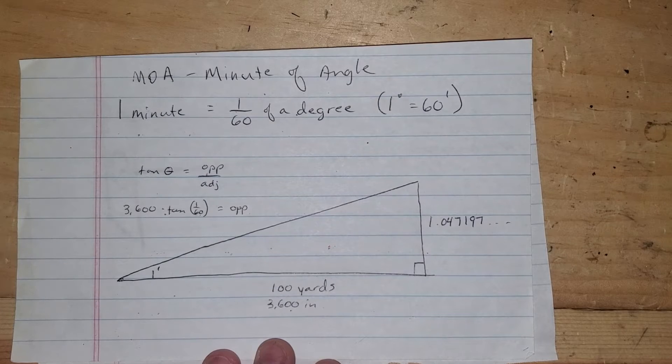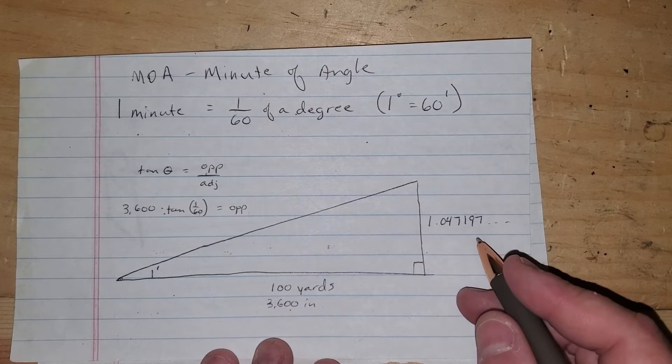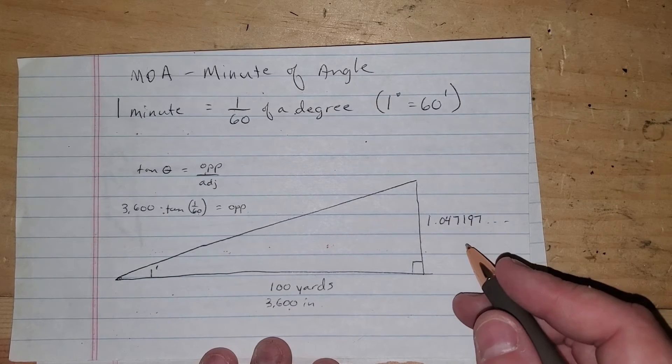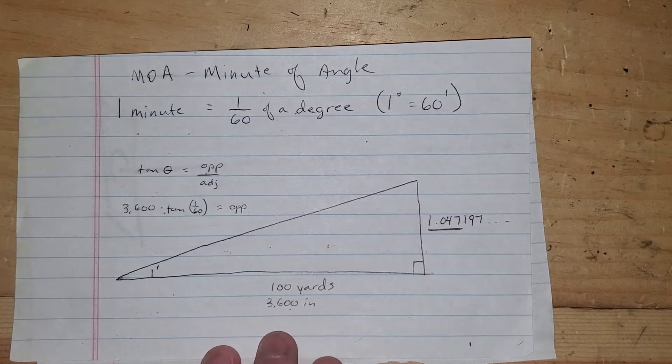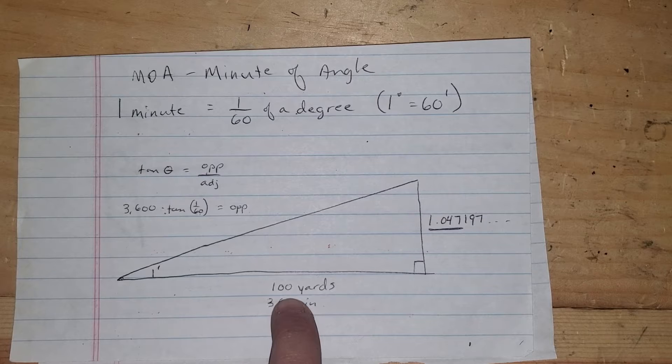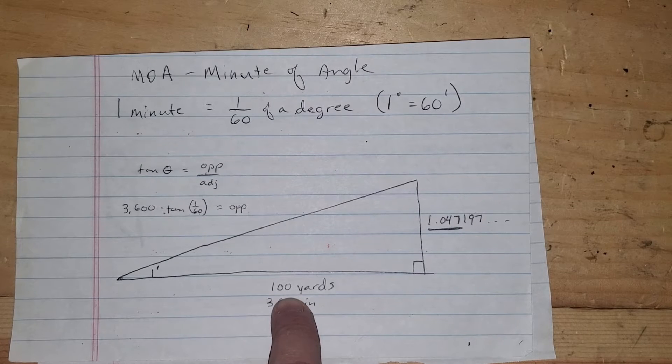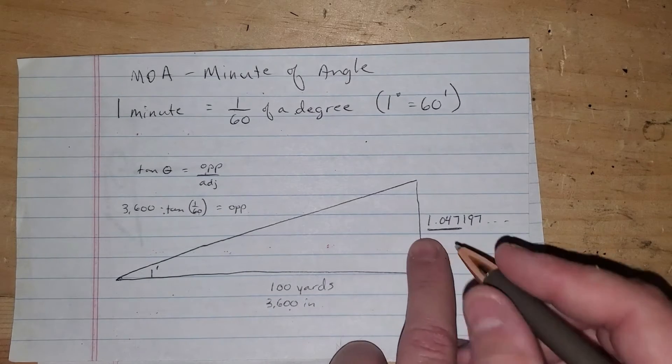And depending on how accurate you want to be, you can call that 1.05, you can call it 1.047, whatever you want to do. But a lot of people will tell you that at 100 yards, one MOA is one inch.